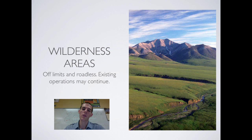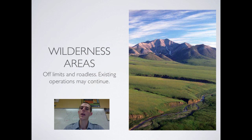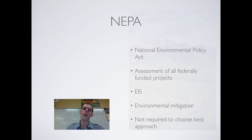The last type of land management to discuss is wilderness areas. Generally, wilderness areas are off limits and roadless — set aside for the maintenance of habitat and the animals within it. A couple of caveats: any roads that existed before an area was designated a wilderness area may remain, and the same goes for any commercial operations such as mining or logging that were in place before the designation.